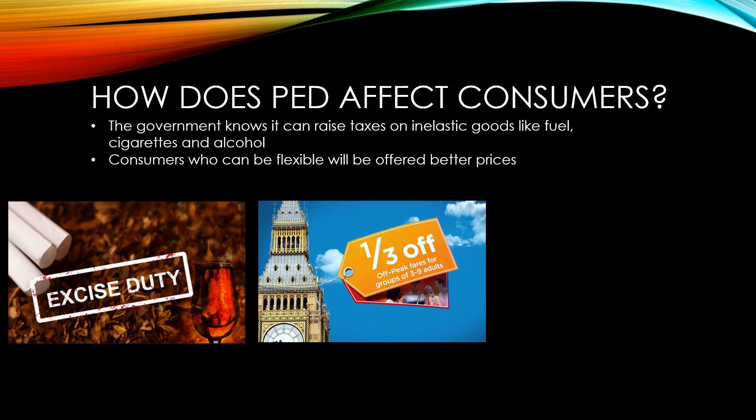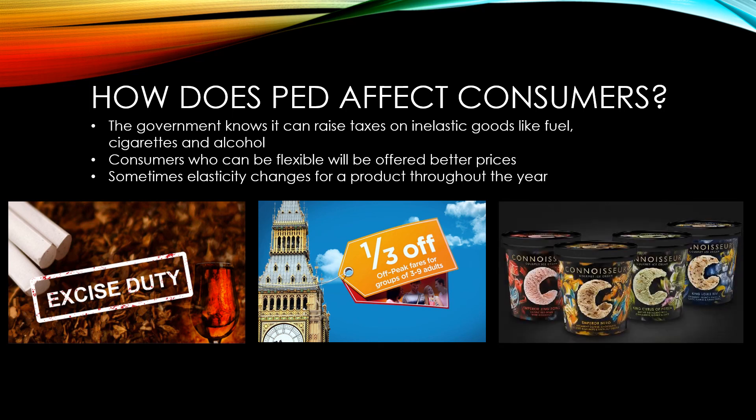Sometimes the elasticity of a product changes throughout the year. This can be seen with things like hotels and flights during school holidays, but it can also be seen with a product like ice cream, which is going to be more desirable in the summertime and therefore may not be discounted as much.